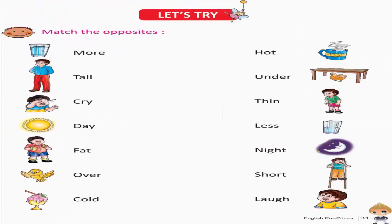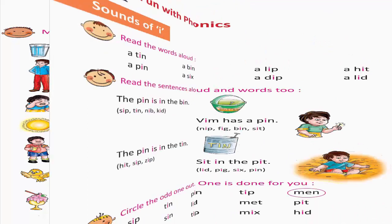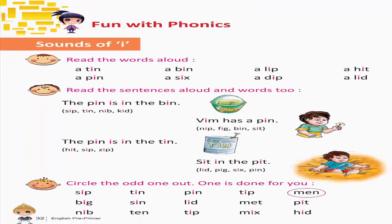Fun with phonics — Sounds of I. Read the words aloud: A tin, A pin, A bin, A six, A lip, A dip, A hit, A lid, A pit. Read the sentences aloud: The pin is in the bin. Sip, Tin, Nib, Kid, Vim has a pin, Nip, Fig, Bin, Sit. The pin is in the tin. Hit, Sip, Zip, Sit, In the pit, Lid, Pig, Six, Pin.